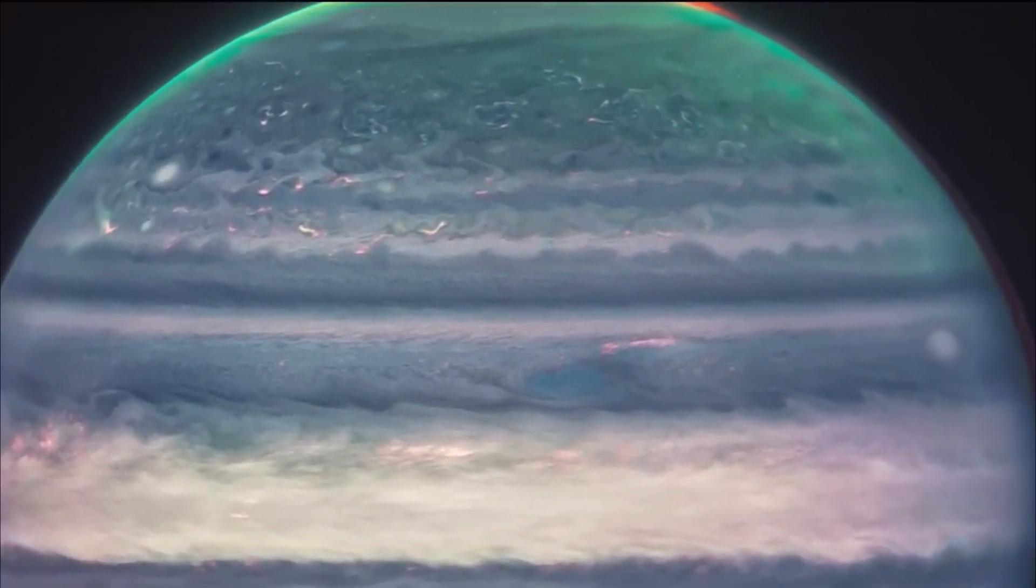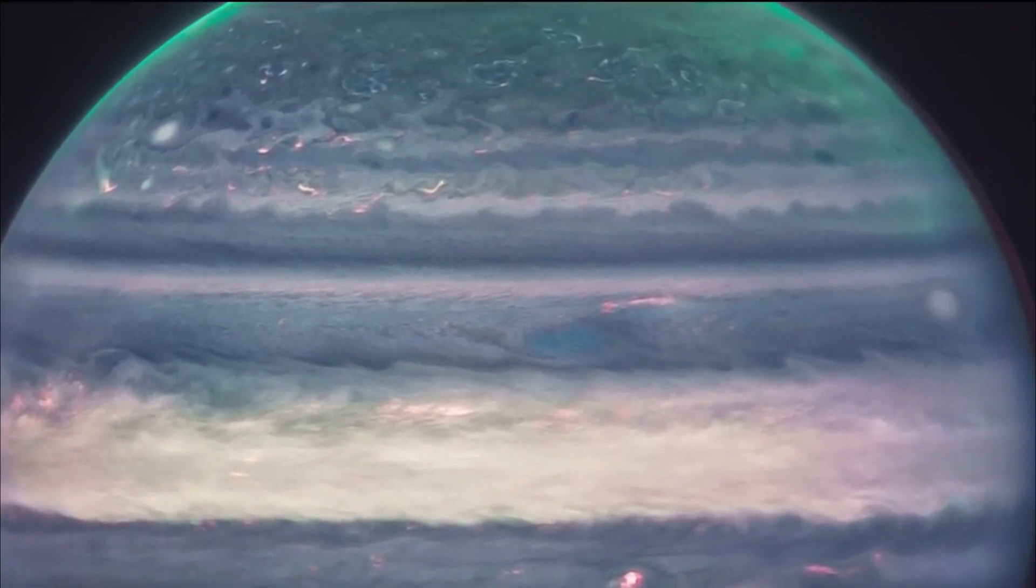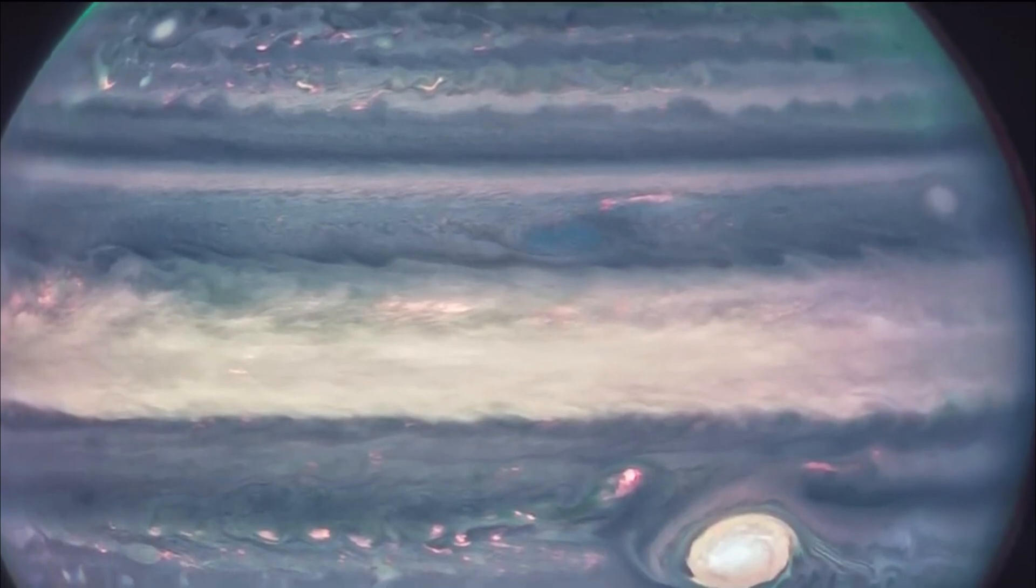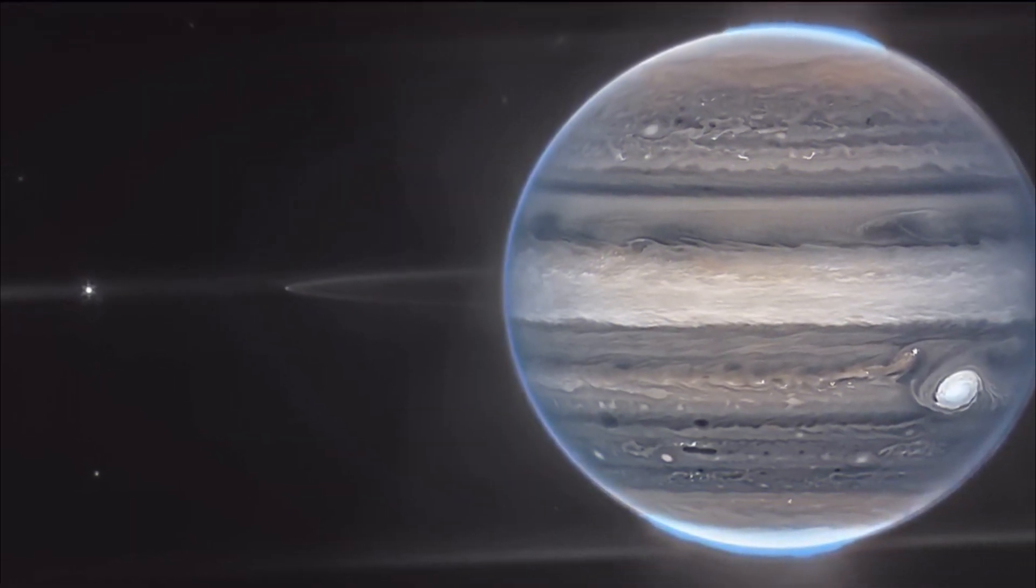Shimmering halo, and its mini-moons Amalthea and Atrasti. Webb lets us peer up close to appreciate Jupiter's splendor in a whole new light, quite literally in the case of its auroras.